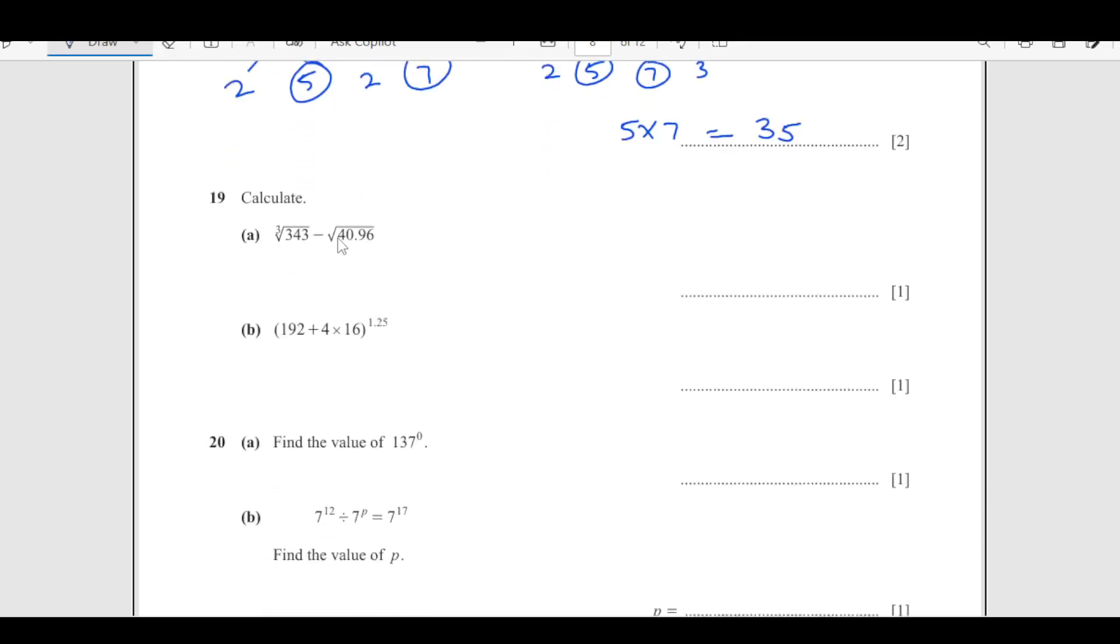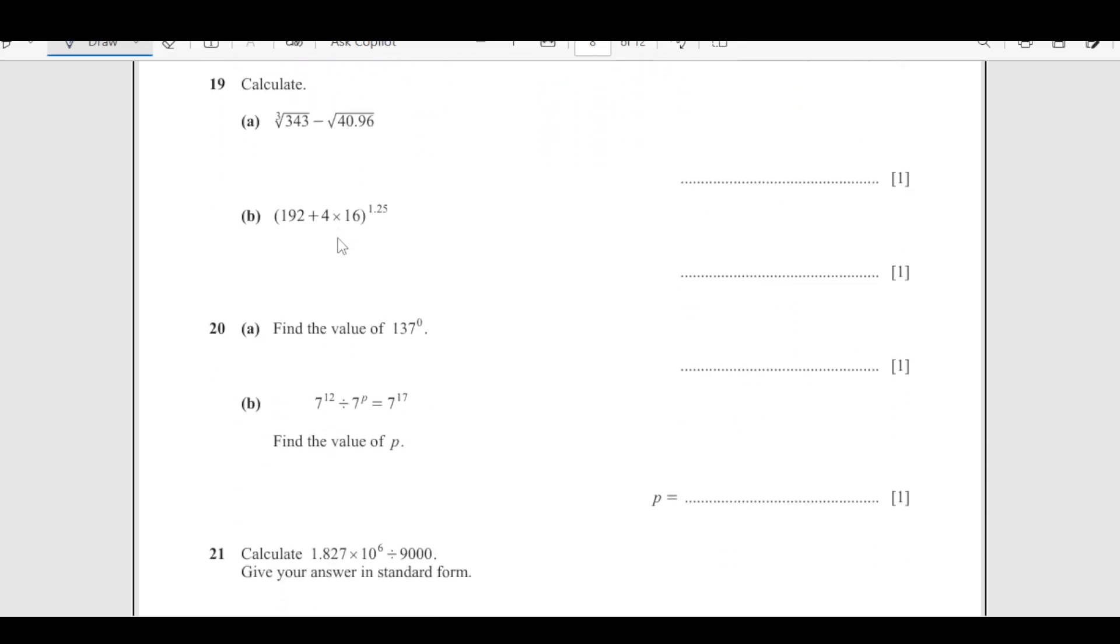Now calculate cube root of 343, which is 7 minus, then this comes out to be 6.4. So final answer is 0.6. So you are just going to plug in directly the values. Nothing else to do. Also same, just put all as it is, then we get 1024.